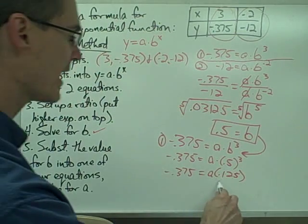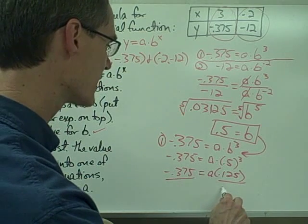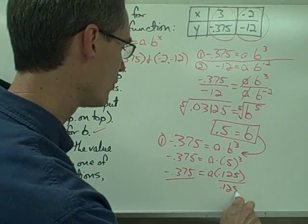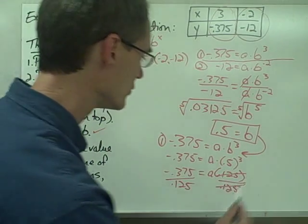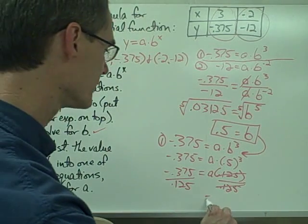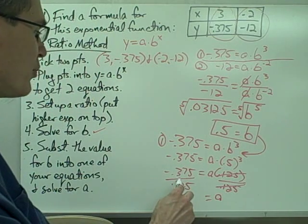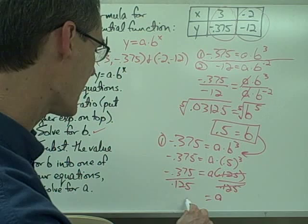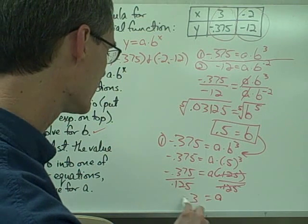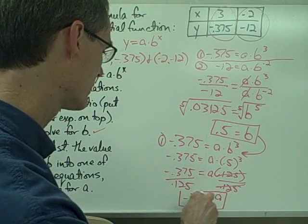Now, since I'm trying to solve this for a, I just want to divide both sides of my equation by 0.125. 0.125, and that's going to cancel out 0.125 on this side, and negative 0.375 divided by 0.125 gives me a equals negative 3.